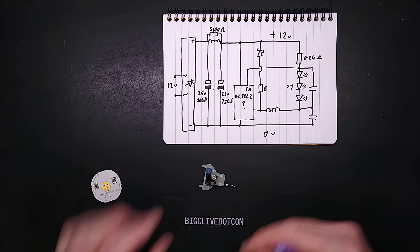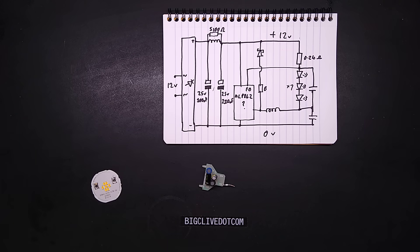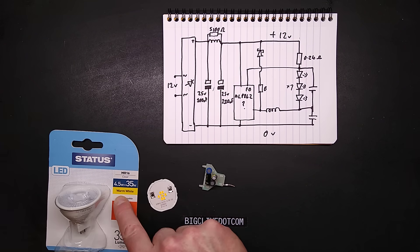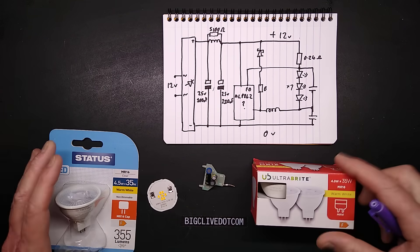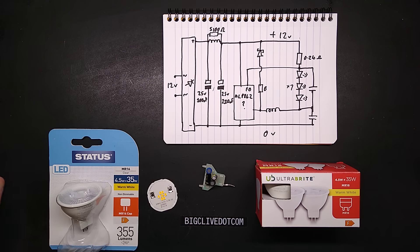The Poundland, because that's where these came from, both the Status and the Ultra Bright MR16 12 volt lamps, they're actually really very simple inside and quite nicely laid out, a good logical design.